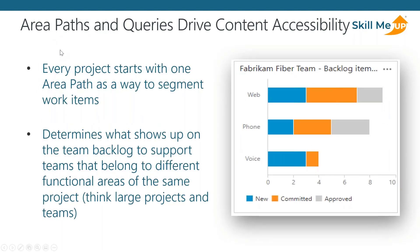Azure DevOps uses area paths to segment work items as it tracks them. You can create individual area paths that correspond to individual features within a larger development process — for instance, a web integration path and a shipping integration path representing different workflows. Additionally, queries drive the content accessibility throughout the entire system. Everything you see related to work items within the workflow of Azure DevOps has an underlying query that drives the result.